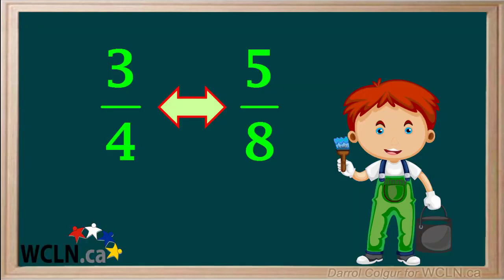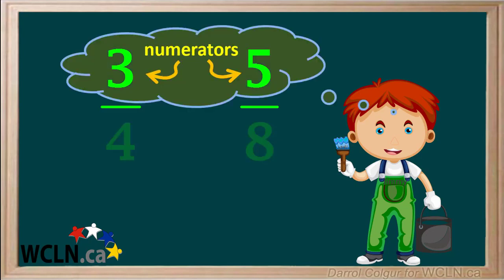The problem is when Jimmy is considering the two fractions, three-quarters and five-eighths, he's only thinking about the numerators and comparing those. The numerator five is larger than the numerator three, but does that make the fraction five-eighths larger than the fraction three-quarters?